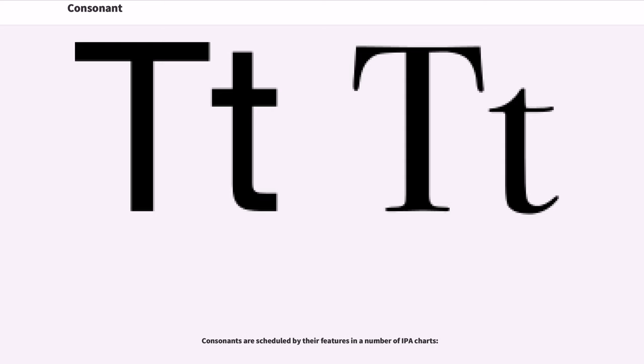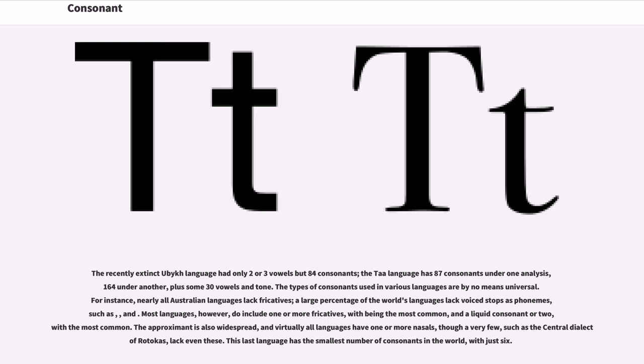Consonants are scheduled by their features in a number of IPA charts. The recently extinct Ubykh language had only two or three vowels but 84 consonants. The !Xóõ language has 87 consonants under one analysis, 164 under another, plus some 30 vowels and tone.